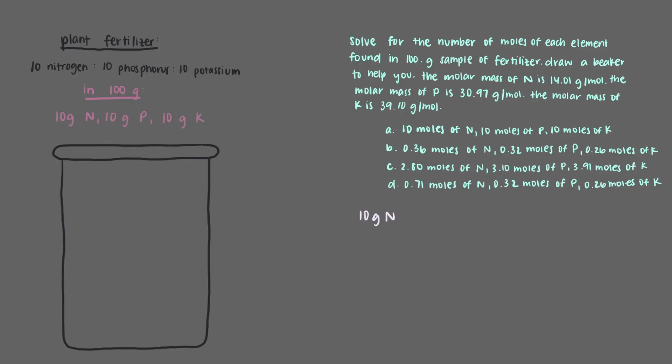We have 10 grams of nitrogen and we'll set up this conversion factor to get that there are 0.71 moles of nitrogen in 10 grams. We also have 10 grams of phosphorus and setting up this conversion factor and multiplying it out tells us that there are 0.32 moles in 10 grams of phosphorus. Starting with 10 grams of potassium and using its conversion factor gives us that there are 0.26 moles in 10 grams of potassium.